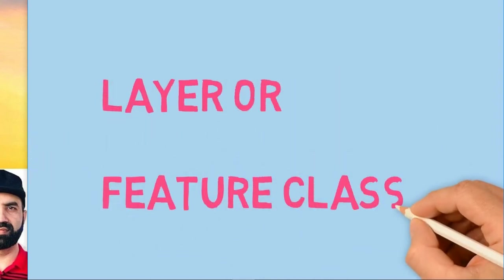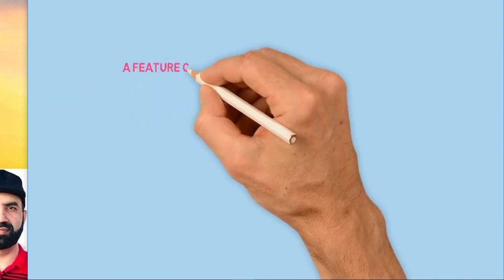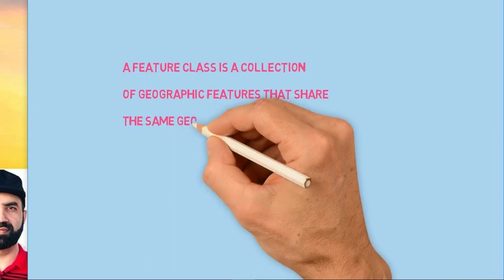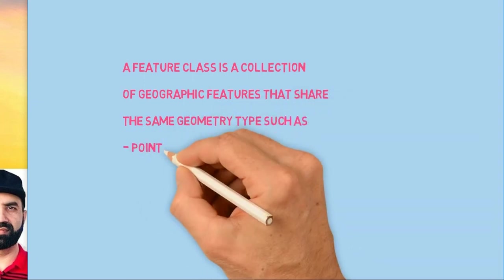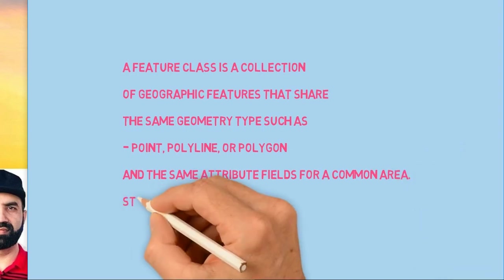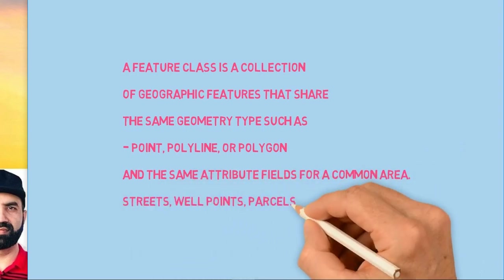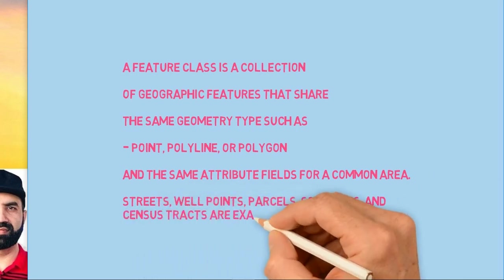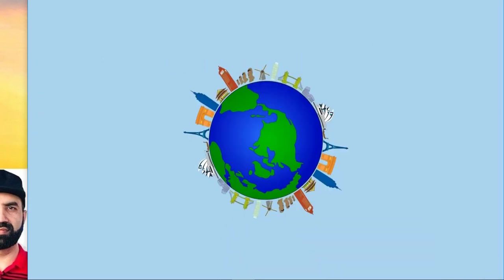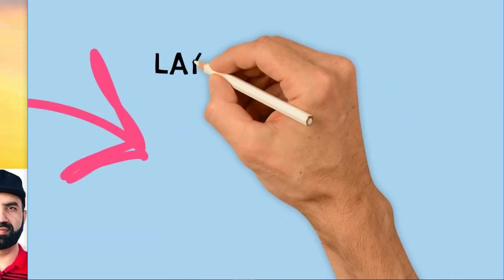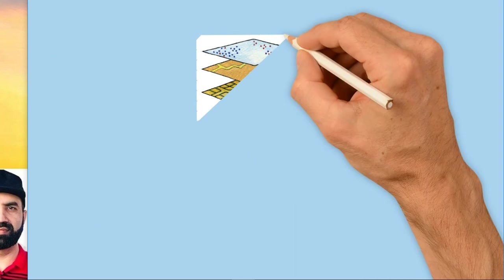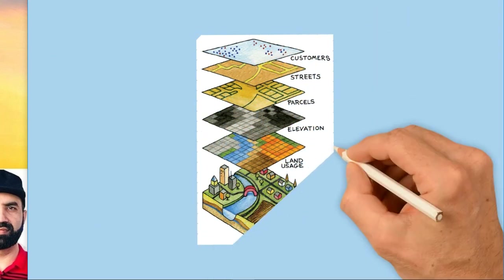A feature class is a collection of geographic features that share the same geometry type, such as point, polyline, or polygon, and the same attribute fields for a common area. Streets, well points, parcels, soil types, and census tracts are examples of feature classes. Suppose this is our planet Earth—if you want to survey or digitize it, you can digitize in three types of layers: point, polyline, and polygon or area. Here is an example of feature classes.